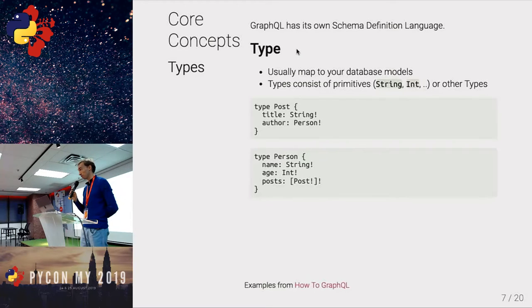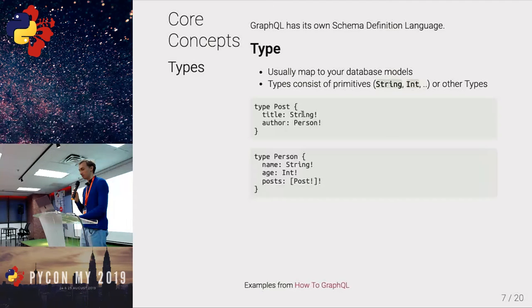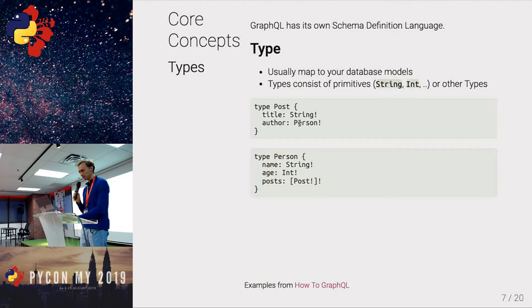Now an introduction to the GraphQL syntax. The first structure to be familiar with is the type, which is roughly like a Django model or a class. For example, I'd have a class called Post with attributes like title and author. There are primitive types like string, integer, or boolean, but you can also use more complex types and reuse types on other objects. It can also be a list of other types. When you have a foreign key in Django, it will automatically model a set on another object — this maps very nicely.